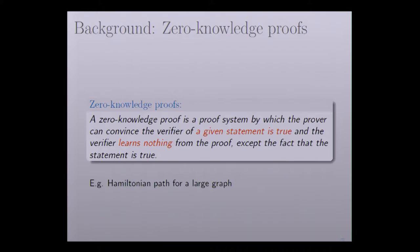For example, the prover can convince the verifier that there exists a Hamiltonian path in a large graph, but without showing this path to the verifier or any other useful information.